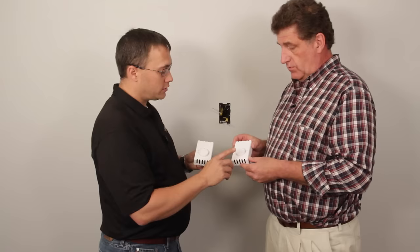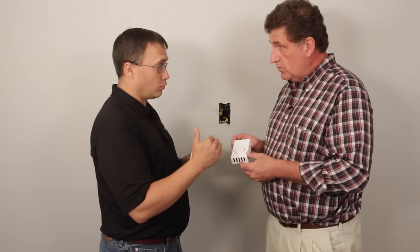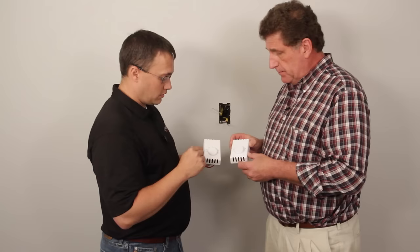So with a single pole thermostat, when this thermostat is set all the way down to 40 degrees, as soon as the temperature in the room falls below 40 degrees, then the thermostat will tell the heater to turn on.